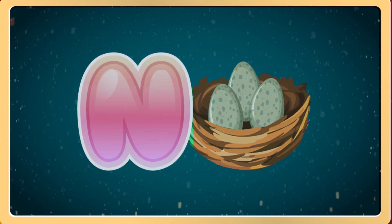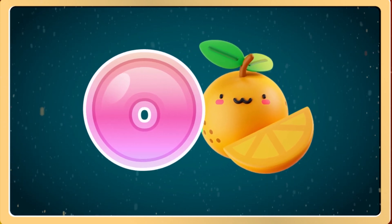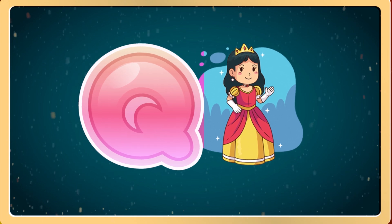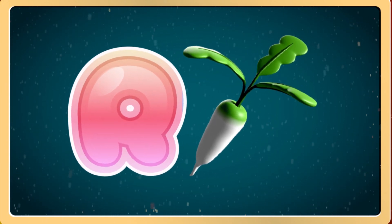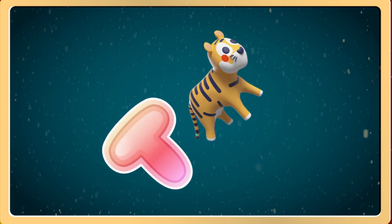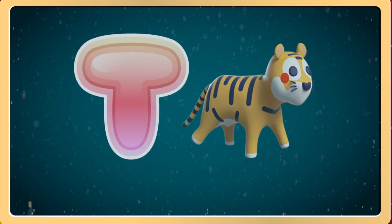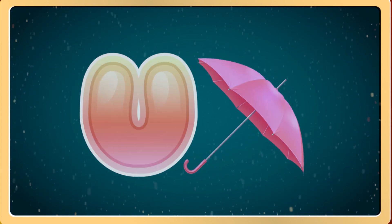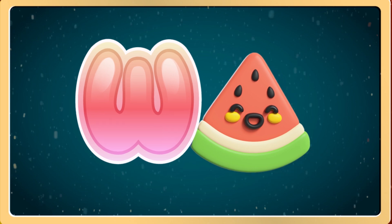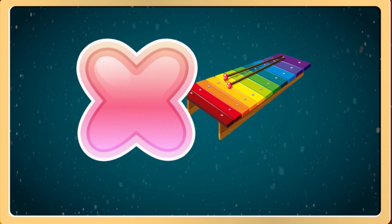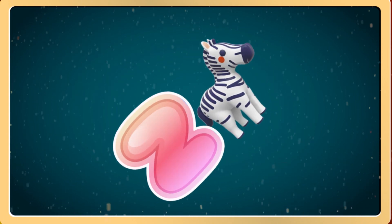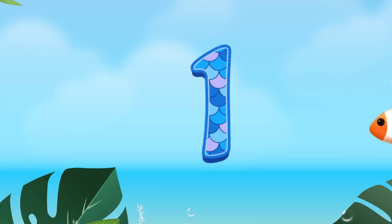N for Nest, O for Orange, P for Pineapple, Q for Queen, R for Radish, S for Strawberry, T for Tiger, U for Umbrella, V for Vegetable, W for Watermelon, X for Xylophone, Y for Yak, Z for Zebra.